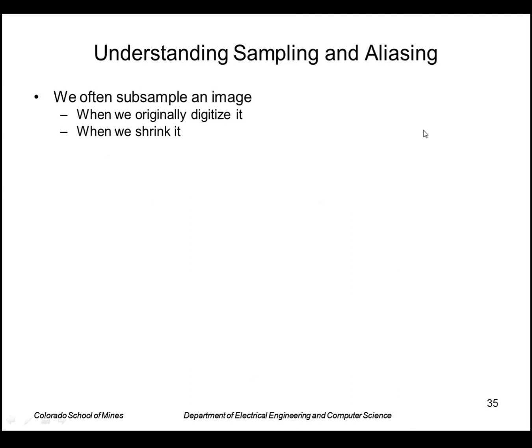So finally I want to talk about sampling and aliasing now that we have all this background on the Fourier transform. This is important in image processing because we're working with digital images, so we're sampling images. We're sampling continuous images and we also resize images. We shrink images and expand them. So what we'll see is that we can reconstruct the image exactly from the samples if the samples are dense enough.